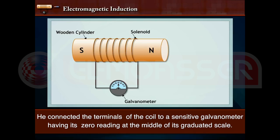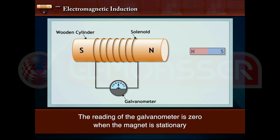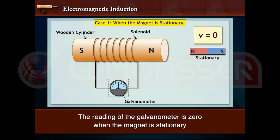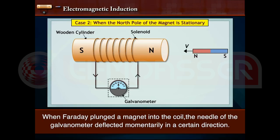The reading of the galvanometer is zero when the magnet is stationary. When Faraday plunged the magnet into the coil, the needle of the galvanometer deflected momentarily in a certain direction.